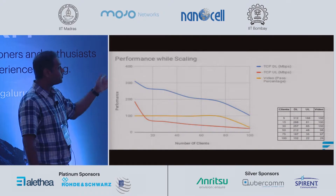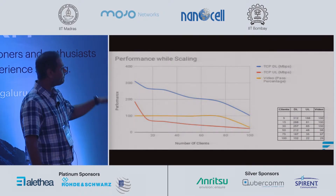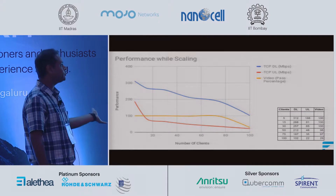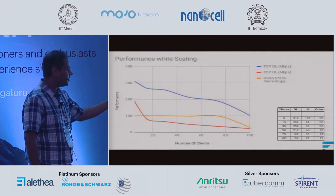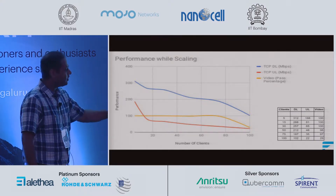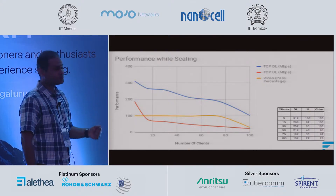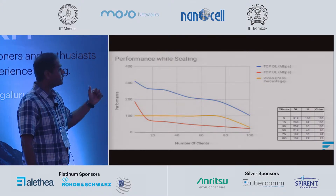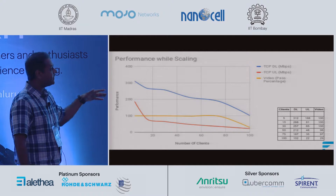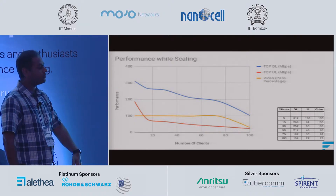The red line is uplink throughput, which falls very fast — from 200 down to below 100 Mbps — as soon as you hit around 20 clients, with a steady fall continuing to 100 clients. In terms of video performance, it stays steady until 75 clients and then we see a sudden drop.